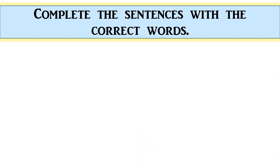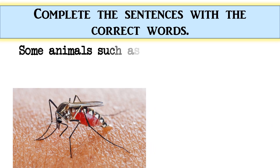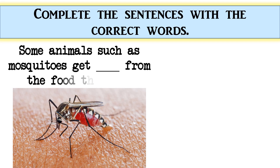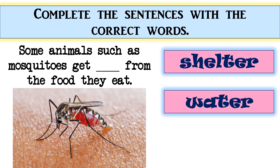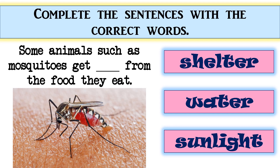Some animals such as mosquitoes get blank from the food they eat. The options are: shelter, water, or sunlight. The correct answer is water. Perfect!